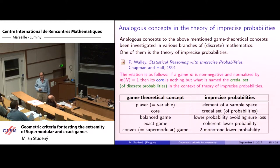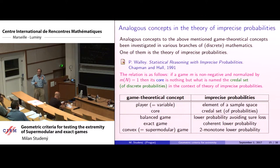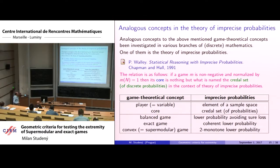Analogous concepts appeared independently in the theory of imprecise probabilities. There is essentially a direct translation: players in game theory correspond to elements of a sample space; the core corresponds to the set of probability distributions. If the game is non-negative and appropriately normalized, the payoff vectors are discrete probability distributions, and the core is what is called a credal set of probabilities in the imprecise probabilities framework.